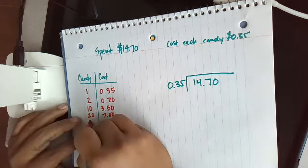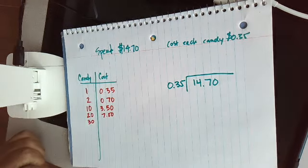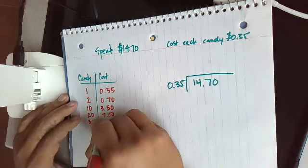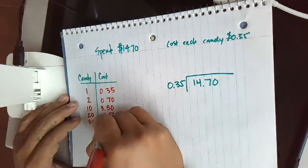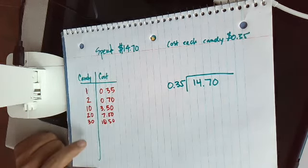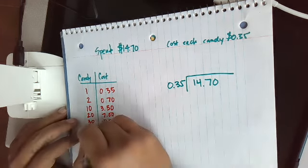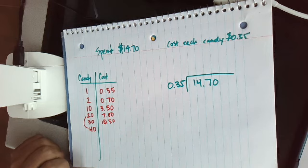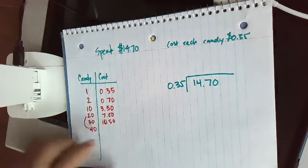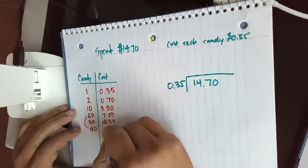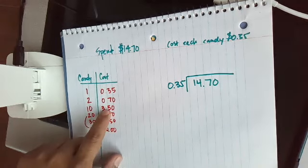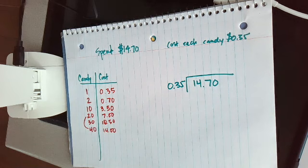So maybe a student says, well, maybe do 30 candies. That's okay. And then we can add $7 and $3.50. That'll give us $10.50. Well, that's pretty close. Let's try 10 more. So some students might say, well, you know what, you could have just doubled it, Mr. Q. Well, that is true. So if I double the seven and the seven, that'll give us $14.